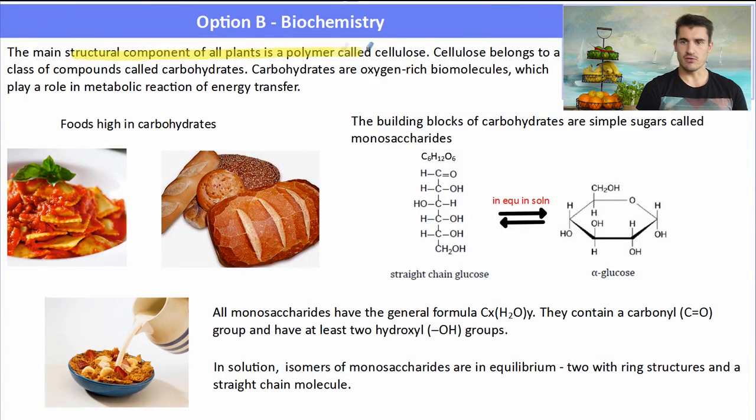So the main structural component of all plants is a polymer called cellulose. Cellulose is a class of compound that belongs to a carbohydrate. A carbohydrate is an oxygen rich biomolecule which plays a very important role in metabolic reactions. The foods we consider to be high in carbs are pastas, fruits and cereals.